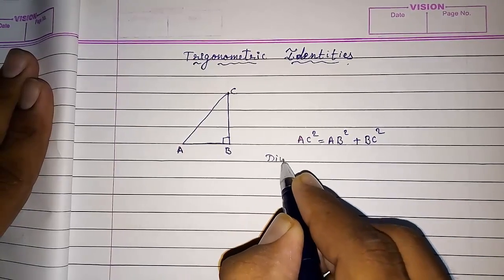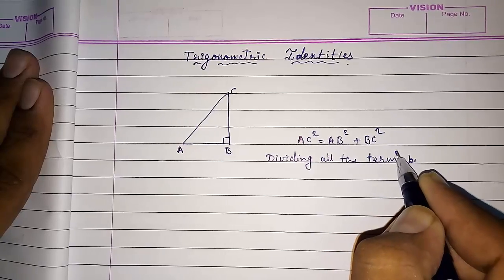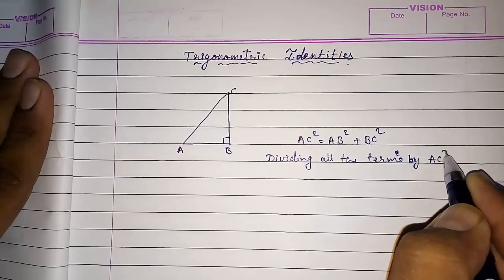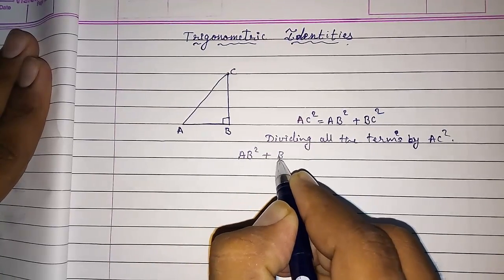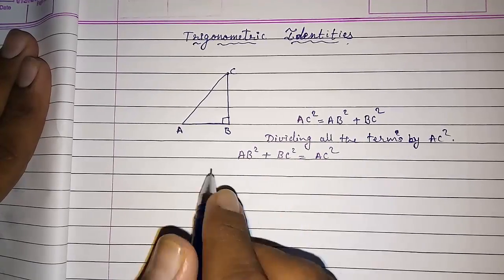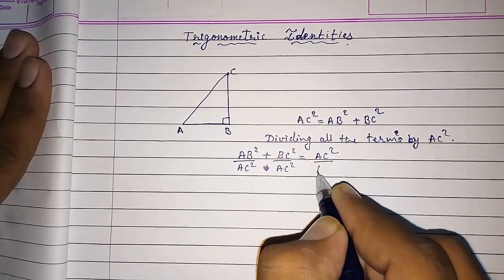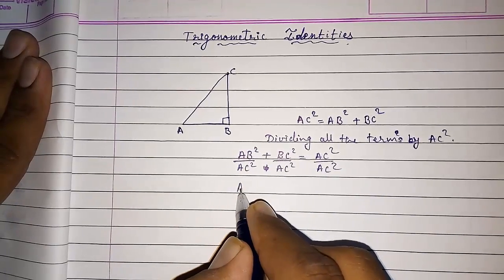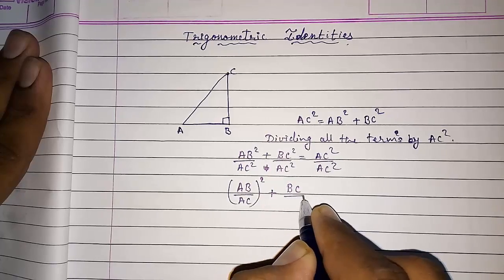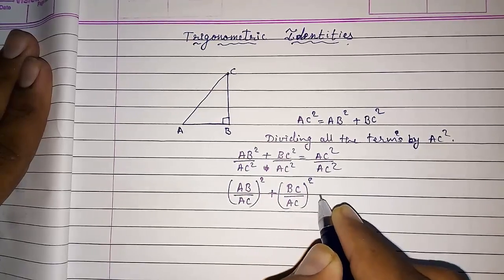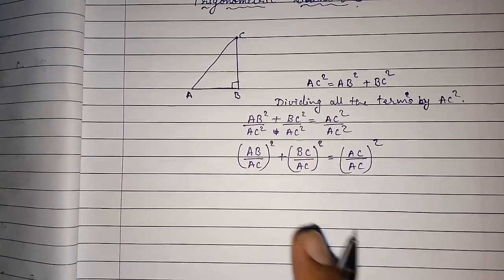Dividing all the terms by AC². What we will get? We will get: AB² plus BC² is equal to AC², and then dividing all terms by AC². So this will be (AB/AC)² plus (BC/AC)² equals (AC/AC)².